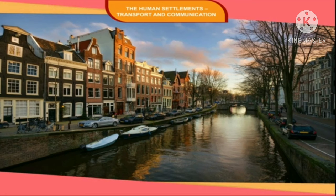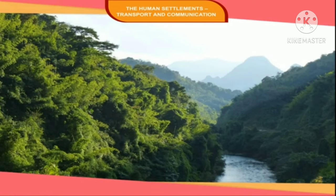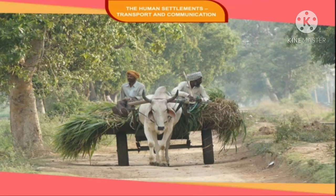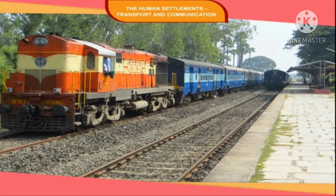Every settlement needs a source of water. This is why the earliest cities of our ancient civilization grew on the banks of river valleys where water was available in plenty. Fertile soil and moderate climate encourage agriculture and other economic activity. Such conditions are found in plains. They also have flatlands which favor the development of transport and communication and encourage trade.